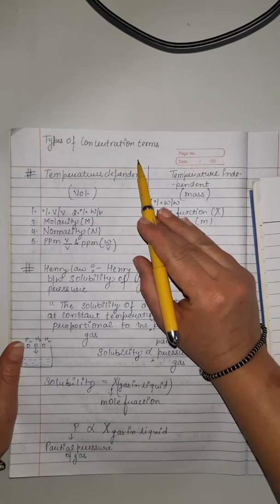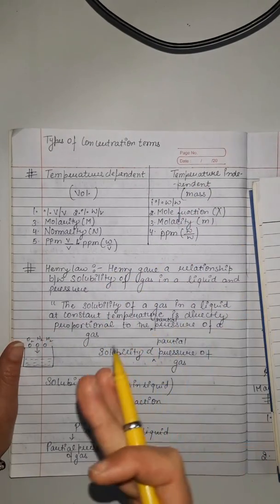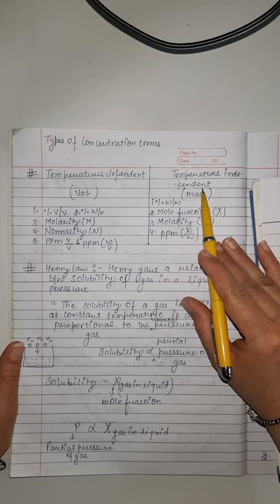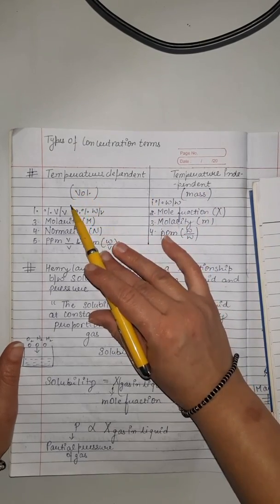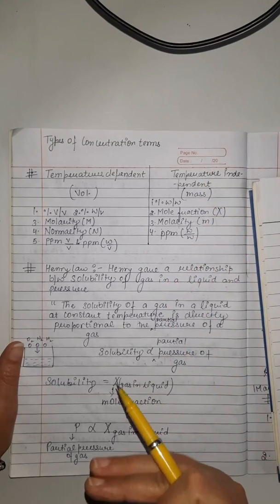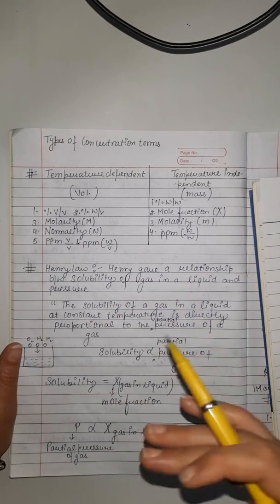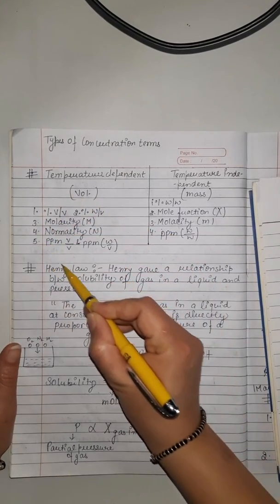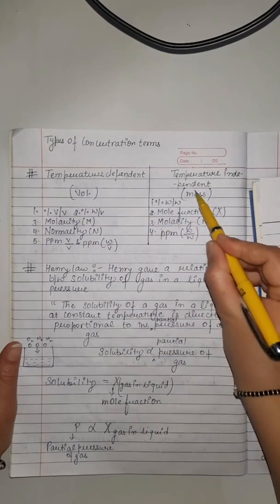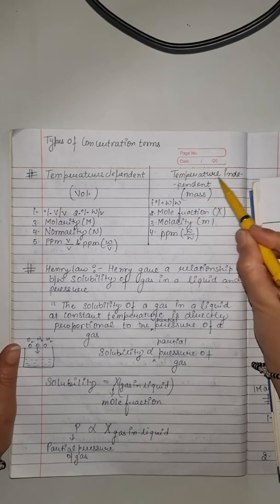As we have already done concentration terms like molarity, molality, and normality. There are some concentration terms which are temperature dependent and some which are temperature independent. As we all know, volume depends upon temperature — as we increase or decrease the temperature, volume will also increase or decrease. But mass will never change according to temperature. So concentration terms which depend upon volume are temperature dependent, and those which depend upon mass are temperature independent.